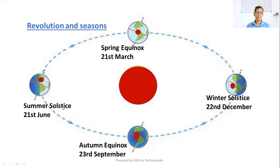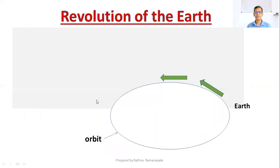Summer Solstice occurs on 21st June, when the Sun is overhead over the Tropic of Cancer. It is known as Summer Solstice.